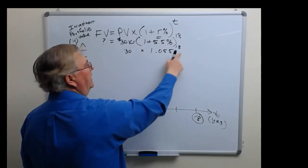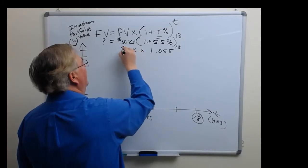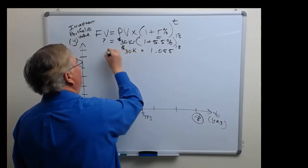And finally we multiply this exponent portion, multiply that by 30k, and that should give us our future value.